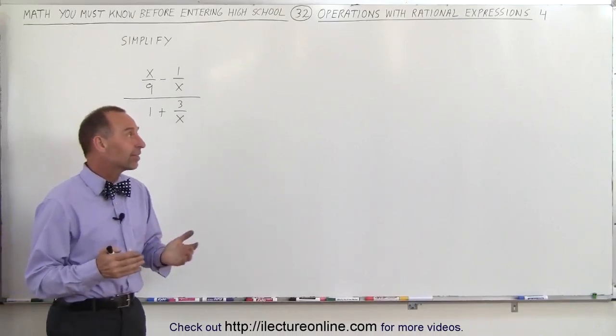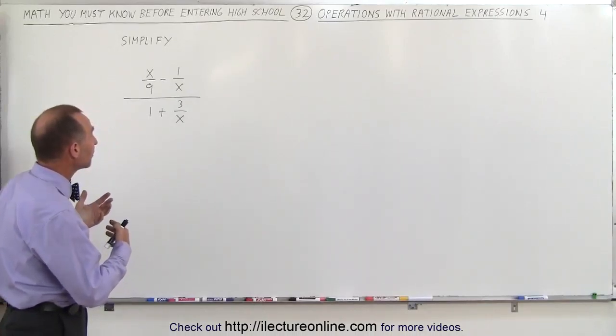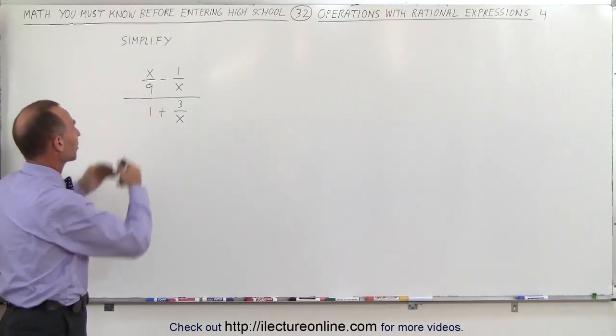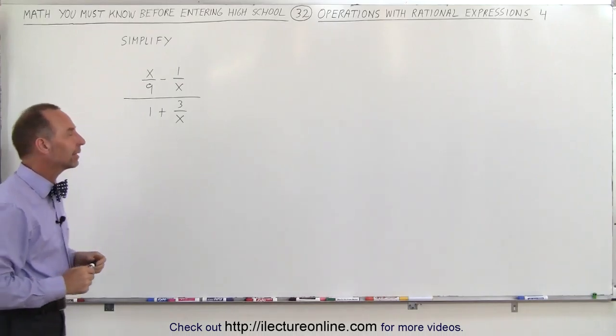Welcome to ElectronLine. Our next example is kind of a complex fraction. We have fractions in the numerator, we have a fraction in the denominator. How do you simplify something like this?